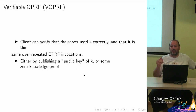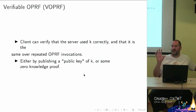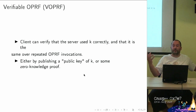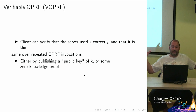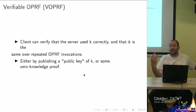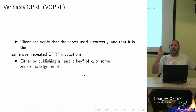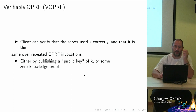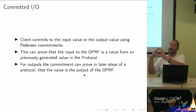Verifiable means Alice can verify that Bob is always using the same K and using it correctly. You want this to prevent Bob from tracking users with special per-user keys — without verifiability, Bob could assign Alice a unique key so that whenever she connects, he recognizes her, even though he shouldn't be able to track her at all. With verifiable OPRFs, Alice can always verify that she gets the same key as everyone else across repeated operations. This is a defense against server cheating — and again, 2-hash-DH supports this.